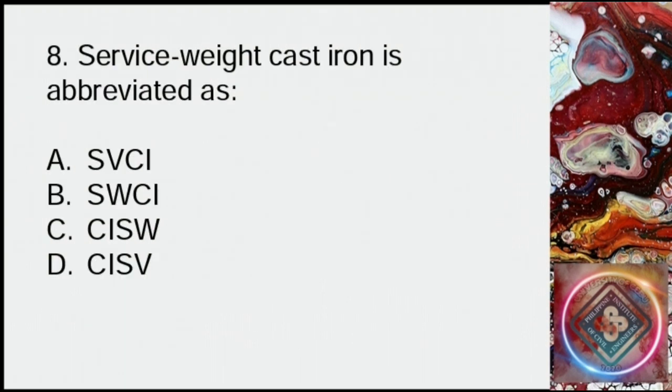Question 8: Service weight cast iron is abbreviated as: A: SVCI, B: SWCI. Answer: B, SWCI, C: CISW, D: CISV.